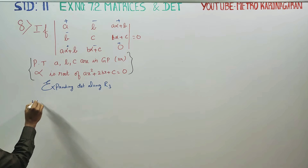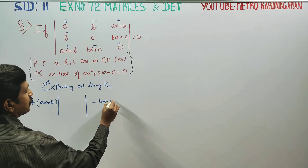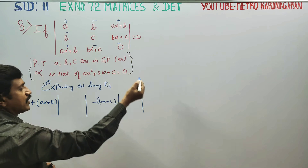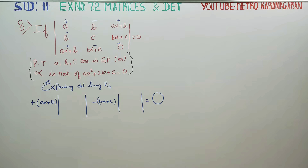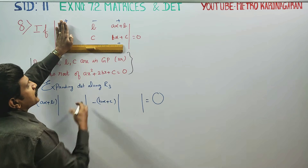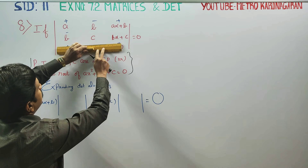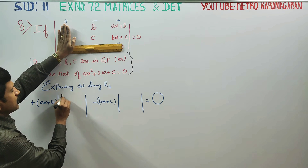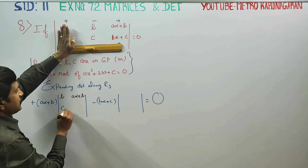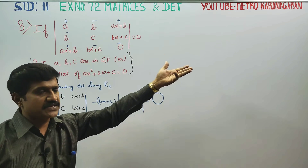Expanding along R3: plus (a·alpha + b) into that minor, minus (b·alpha + c) into that minor. This is equal to 0. Opening R3: the 1-3 step is less than the 1-3 step, this is open, and the 3-3 step is the minor element, and the 2-3 step involves minor replication.